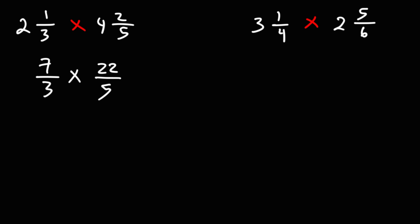Now what we need to do is multiply across. Seven times 22. 22 is 20 plus two, and then we can multiply this by seven. Seven times 20 - seven times two is 14, add the zero, that's 140. Two times seven is 14, so this is going to be 154. On the bottom we have three times five which is 15. So as an improper fraction, the answer is 154 over 15.